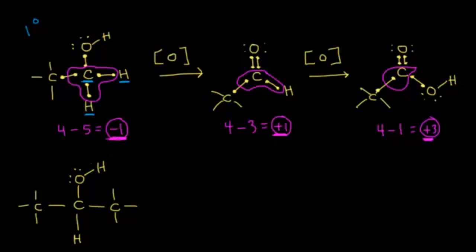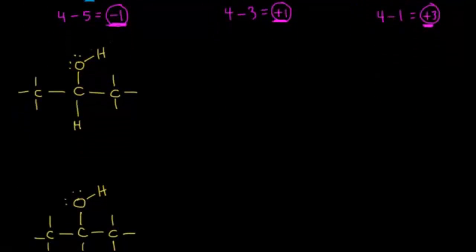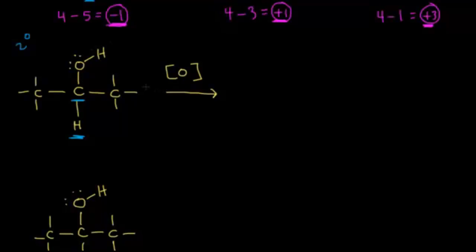Let's look at a secondary alcohol now. We identify the alpha carbon — the one attached to the OH group. We need to have at least one hydrogen on that alpha carbon, and we have one right here. So if we oxidize our secondary alcohol, a simple way to think about it is that the alpha carbon has one bond to oxygen. We increase that to two bonds — an oxidation reaction. We lose the bond to the alpha hydrogen, leaving two alkyl groups, which gives us a ketone. If you oxidize a secondary alcohol, you're going to end up with a ketone.